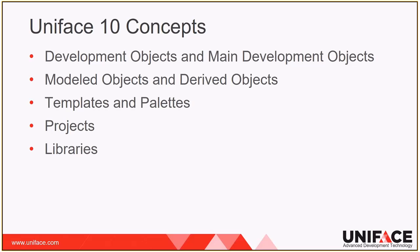Modeled entities and fields are entity and field definitions that define the data that the application accesses, as well as non-database objects such as reusable buttons. Modeled properties are the named values of selected entity and field properties such as the field interface, field layout, and field syntax properties — in Uniface 9 they were known as templates. Modeled components are components used to create other components with the same component-level properties and ProcScript — in Uniface 9 they were known as component templates. The application model no longer exists as a separate object; instead it's a mandatory part of the modeled entity name and identifies the entity's namespace.